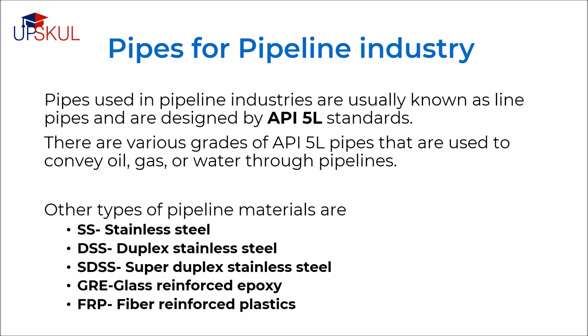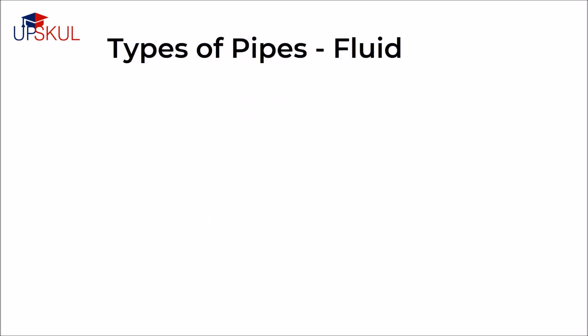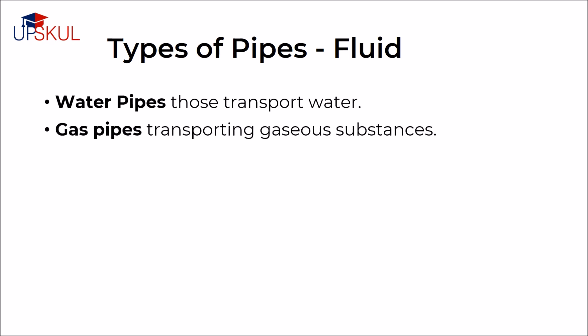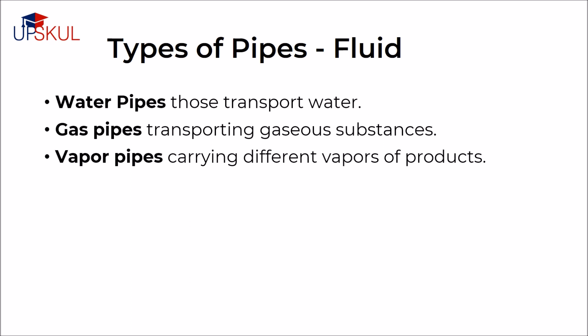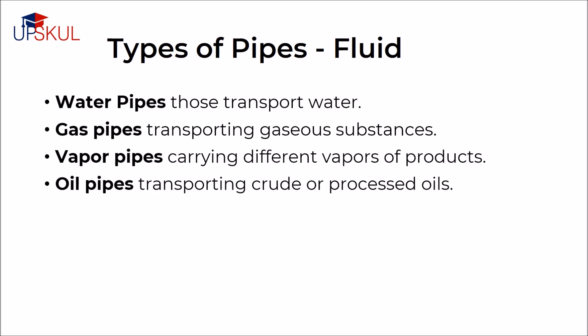Depending on the type of fluid they transport, pipes are categorized as water pipes which transport water, gas pipes that transport gaseous substances, vapor pipes that carry vapors of products, oil pipes that transport crude or process oils, steam pipes transporting steam, and hydrogen pipes that carry hydrogen.